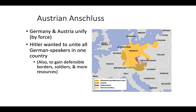So the Austrian Anschluss — Anschluss means unity, or unite. So Austrian Anschluss is the unity of Germany and Austria, and he did do this by force. Hitler wanted to unite all German speakers in one country. He also wanted to gain defensible borders, soldiers, and more resources.